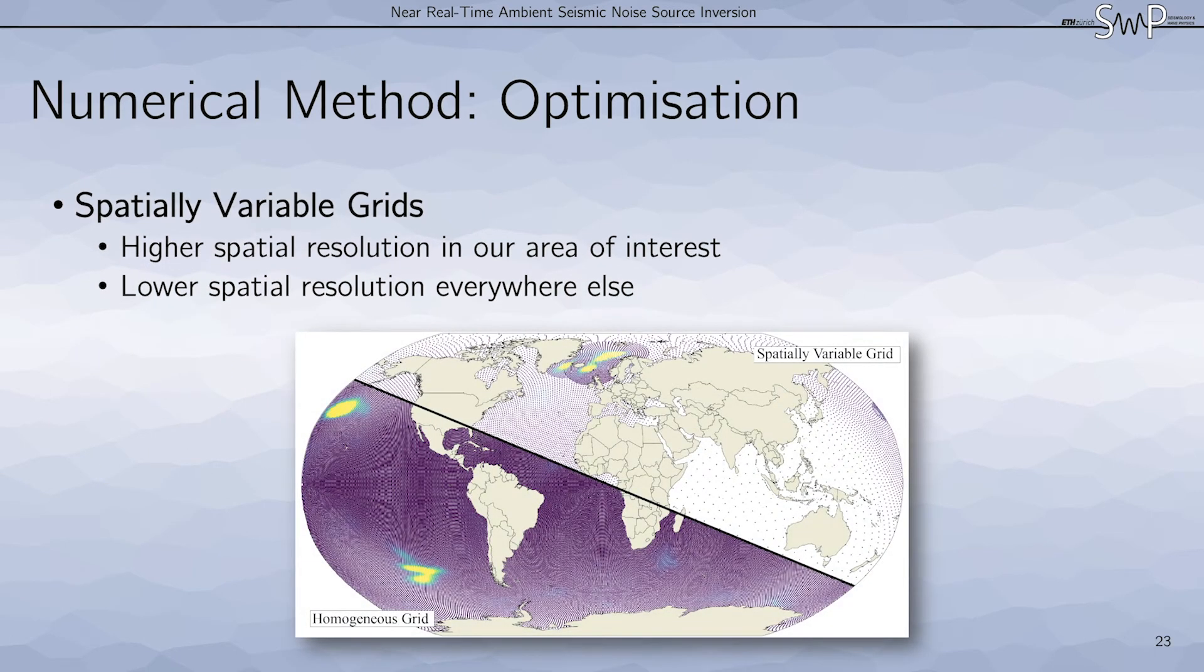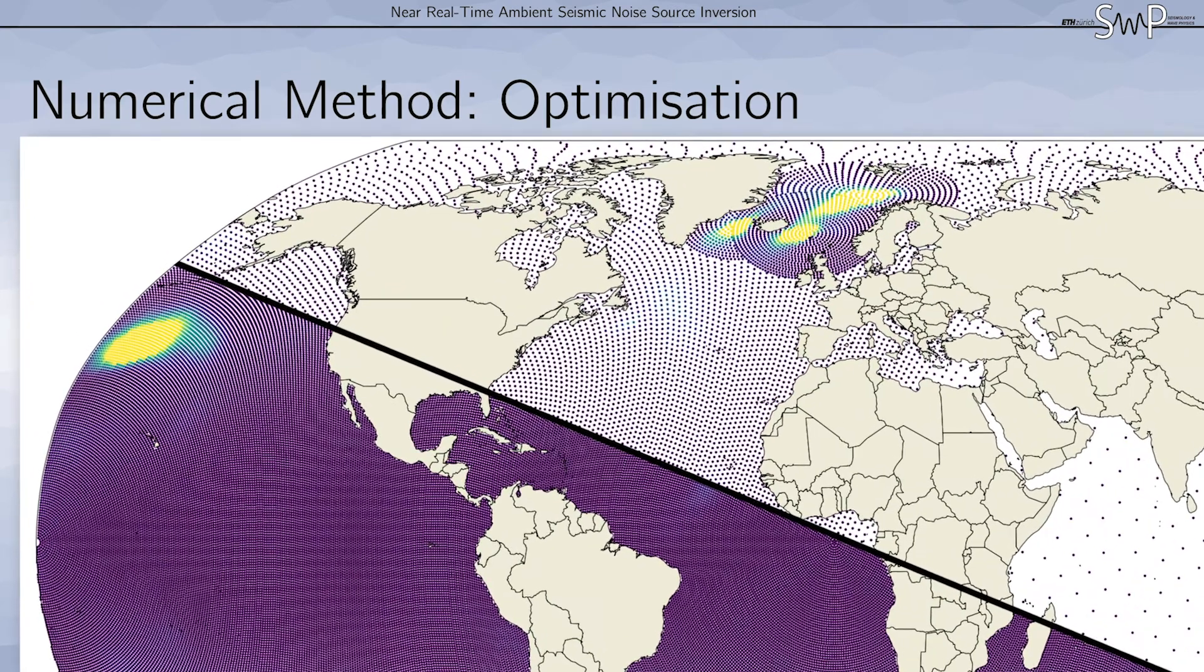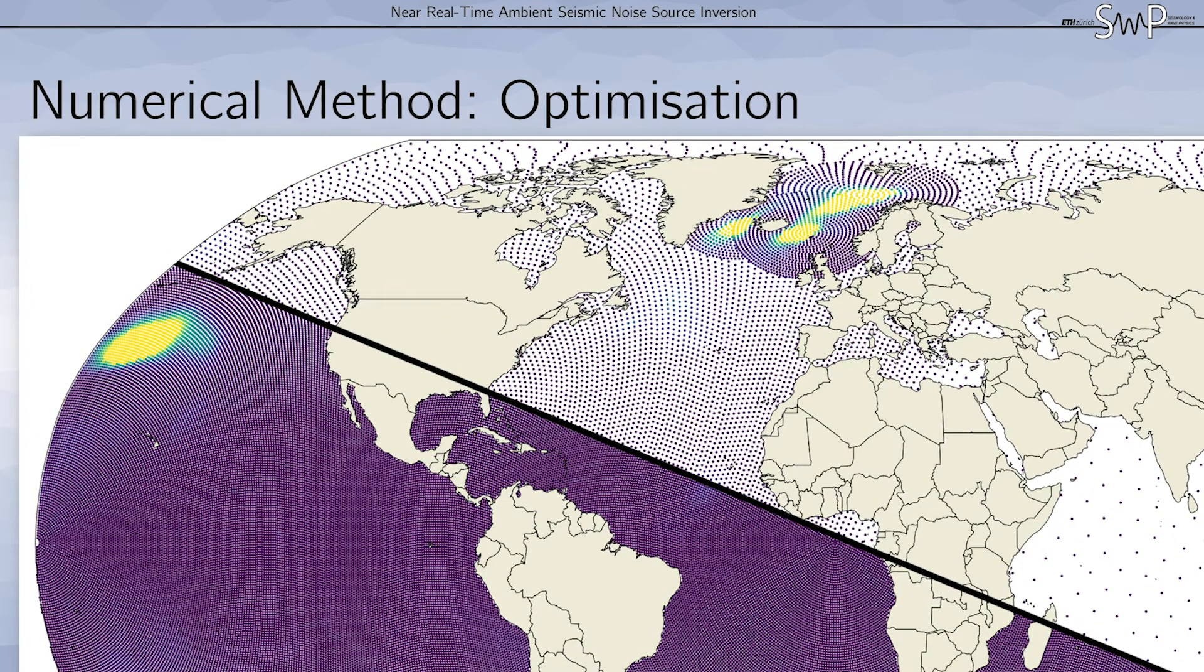Now let's say we want to forward model cross correlations and we have a model that has strong sources in certain areas. These spatially variable grids allow us to increase the spatial resolution in areas of strong noise sources and decrease it everywhere else, as we can see here.